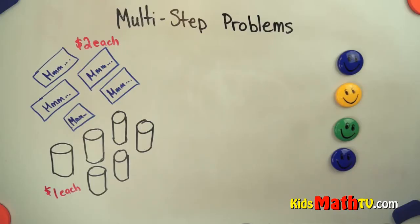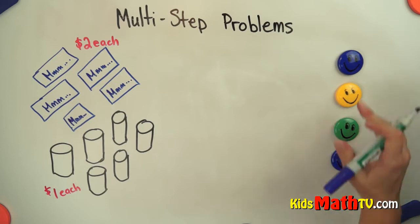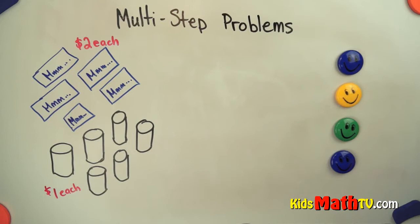In this lesson, you're going to learn about solving multi-step problems. This is a real-life type of problem. There are four friends that are buying some things at the store, but they're going to split the cost.